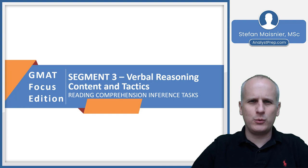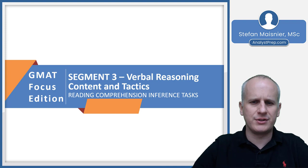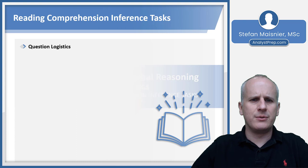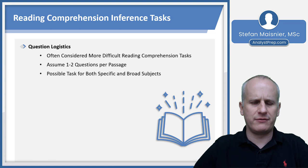In this lesson we'll be covering the approach for one of the more complex and often difficult tasks you'll encounter with reading comprehension passages in the verbal reasoning section, and that's going to be inference tasks. First, let's talk about how many of these you'll likely see per passage. They are going to be often considered more difficult reading comprehension tasks — you're going to generally see one to two inference questions per passage in the verbal reasoning section, but it is a possible task for both specific and broad subjects.